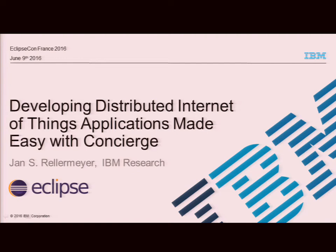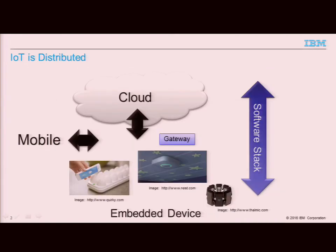Thank you very much for making it to my talk, which is called Developing Distributed Internet of Things Application Made Easy with Concierge. My name is Jan Rellemeier. I'm with IBM Research in Austin, Texas. Normally, I have my two co-committers with me, but they couldn't make it this time. One is on paternity leave, the other one had a conflict, so I apologize.